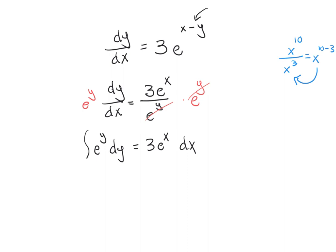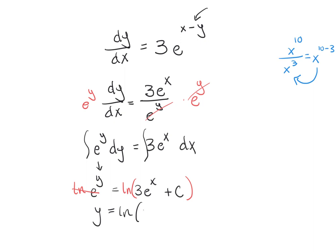Take the integral of both sides. The antiderivative of e to the y is just e to the y, which equals 3e to the x plus c. To solve for y in an exponential equation, take the natural log of both sides — that cancels the e and leaves y. So y equals the natural log of 3e to the x plus c.